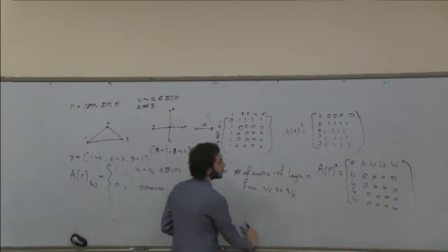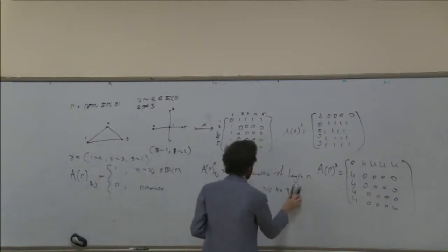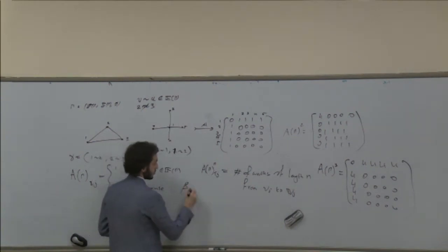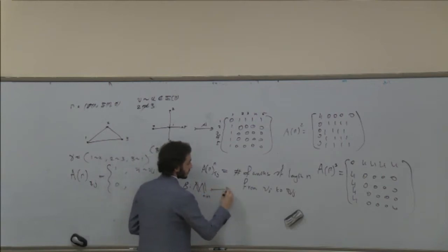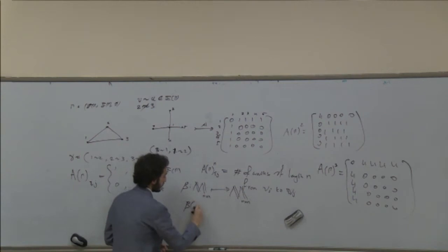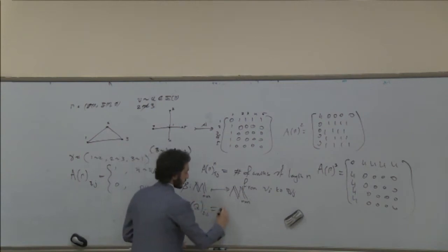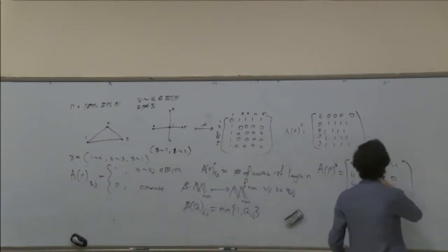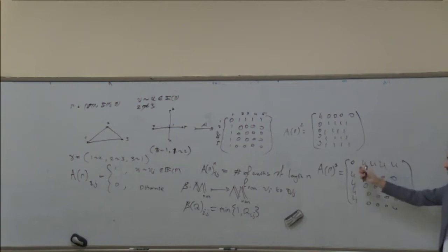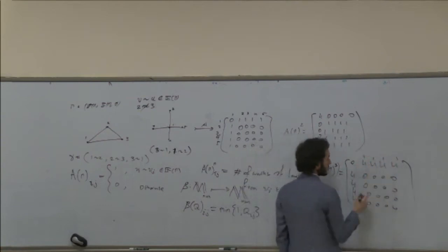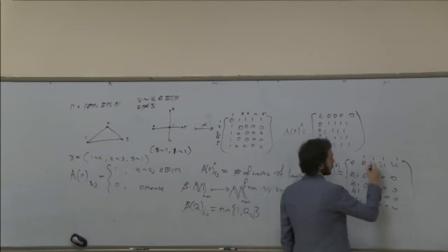Now I define what I call a Booleanized matrix. We take a transformation beta that takes an n-by-n matrix and returns an n-by-n matrix. For each entry ij, it equals the minimum of one and the entry of Q. In practice: go through every element, if it is zero leave it, if it is greater than zero make it one. Applying this to A cubed gives a matrix of zeros and ones showing which paths exist.